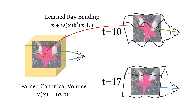Furthermore, we learn a soft rigidity mask that we apply to the offsets to improve the stability of the rigid background. This rigidity network is shared across time and independent of the deformation. Both the ray-bending and the rigidity networks are trained without any explicit supervision. We propose a combination of a photometric loss and regularizers for training.